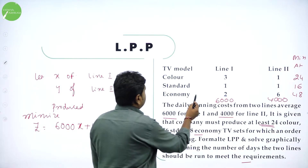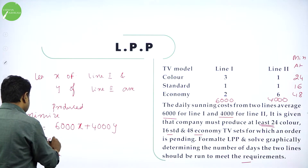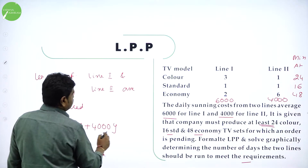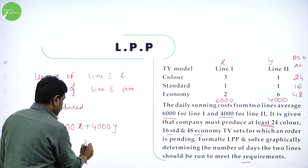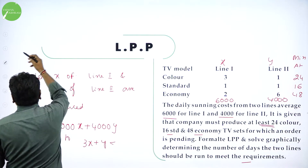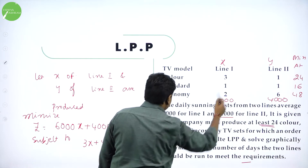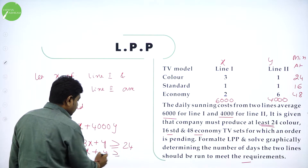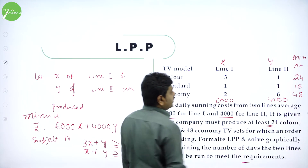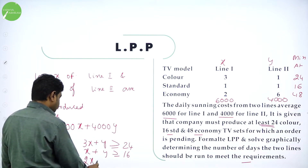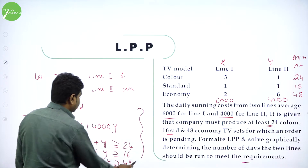Now, what are the conditions? For color, the minimum requirement is 24, meaning that much or more. So subject to: the first constraint is 3X + Y ≥ 24. The second constraint for standard is X + Y ≥ 16. And the third constraint for economy is 2X + 6Y ≥ 48. We have now formulated the LPP.